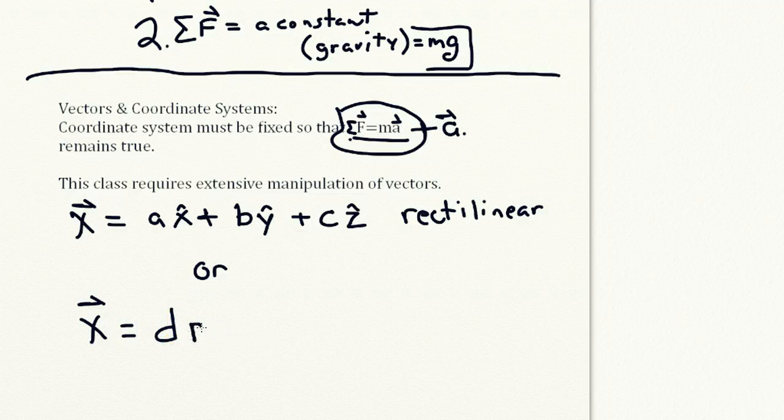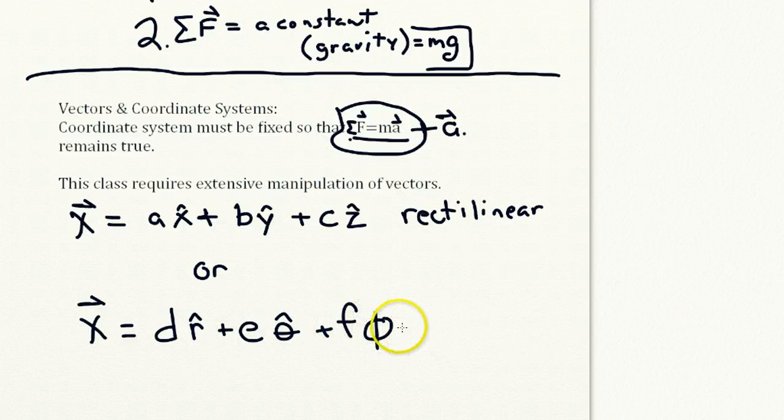D in the r-hat direction, plus E in the theta-hat direction, plus F in a phi direction. And this we'll call the radial system of coordinates.